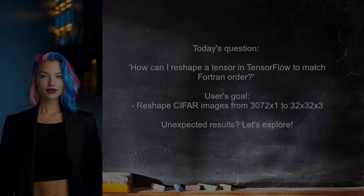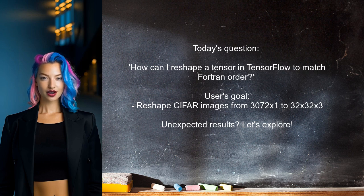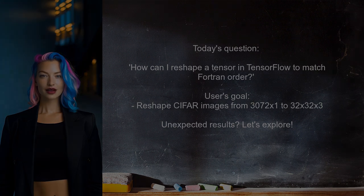Here's the specific question we're addressing today. One user asked: how can I reshape a tensor in TensorFlow to match Fortran order, similar to NumPy's reshape function? They were trying to reshape CIFAR images from a vector of shape 3072 by 1 to 32 by 32 by 3, but ended up with unexpected results. Sound familiar? Let's explore this together.